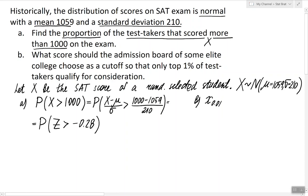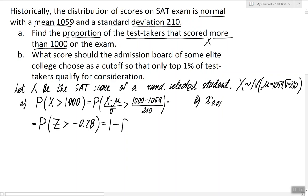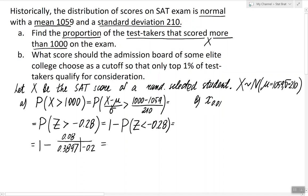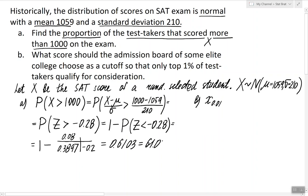Now that we have converted the question into one about the standard normal variable, we find P(Z > 0.28). Using the complement rule, this equals 1 minus P(Z < 0.28). Looking up the table, we find the row for 0.2 and the column for 0.08, giving 0.3897. Subtracting from 1 gives 0.6103. So the proportion of test takers that scored more than 1000 on the SAT exam is 61.03%.